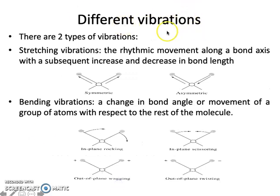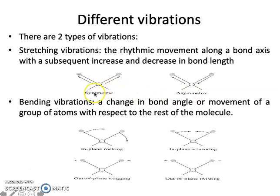Vibrations are of two types: stretching vibration and bending vibration. Stretching vibration takes place along the bond axis, and there are two types: symmetric and asymmetric. Symmetric stretching means both bonds stretch in the same direction along the bond length. Asymmetric stretching means the vibration along the bond length occurs in opposite directions.